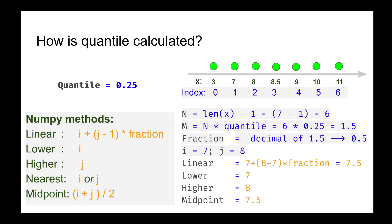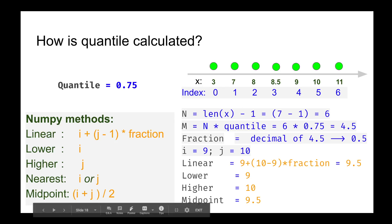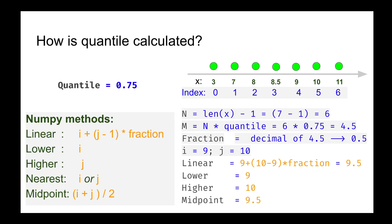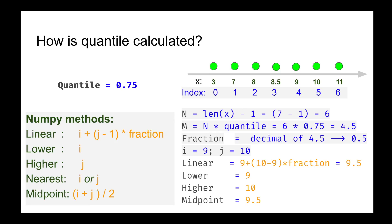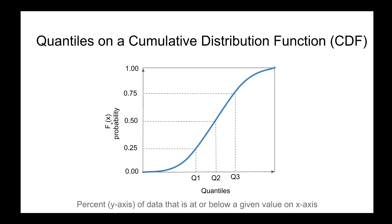Let's look at another example using the 0.75 quantile. We calculate m as 4.5, which falls between indices 4 and 5. So i = 9 and j = 10. The fraction is again 0.5. Substituting those values: for linear we get 9.5, lower gives 9, higher gives 10, and midpoint gives 9.5. These are the different implementations of how quartiles are calculated.